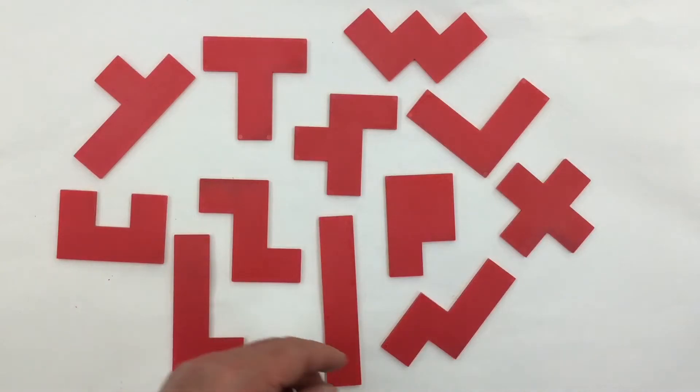Some are a little harder to see, like the N and the F for example.